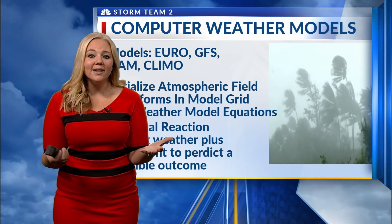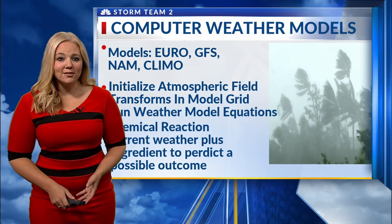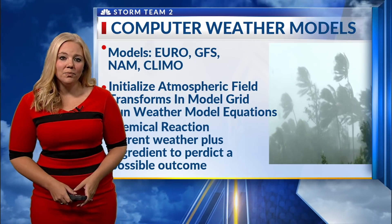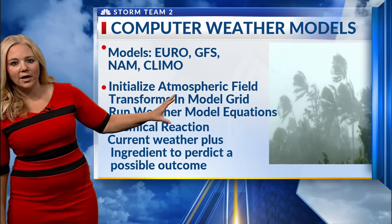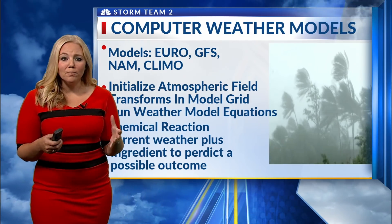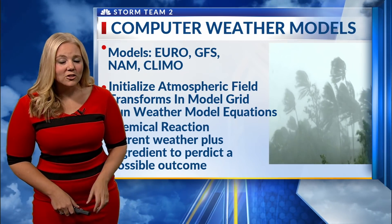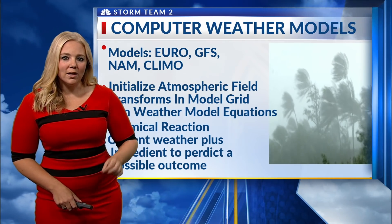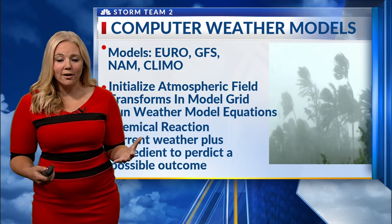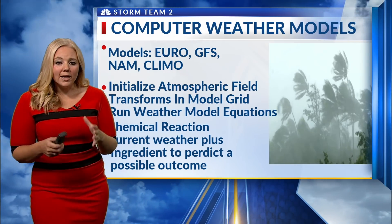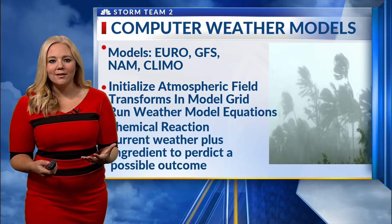Let's start off with what is a computer model. All across the country, there are weather stations that release weather balloons at the exact same time, twice a day. All that data is compiled into what's called a model grid, and then it's inputted into a different model equation. There are over 100 models all across the world, and each equation is a little different. So we get over 100 different outputs of the potential track of a storm. We as meteorologists have to step in and look at all of this information and make an educated guess on what's going to happen.